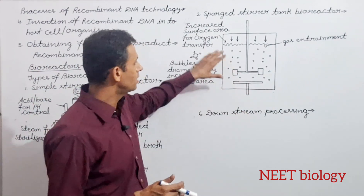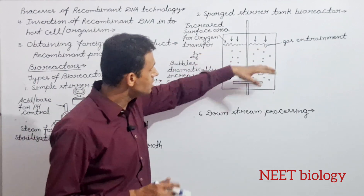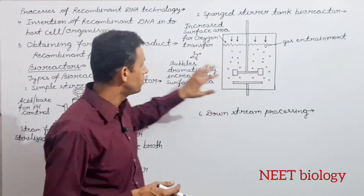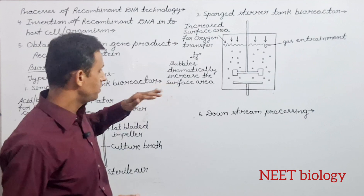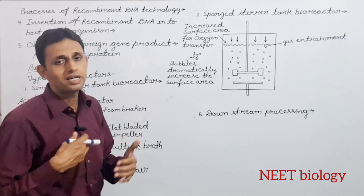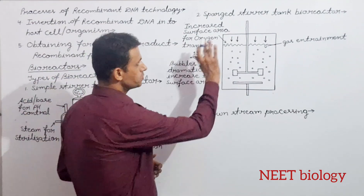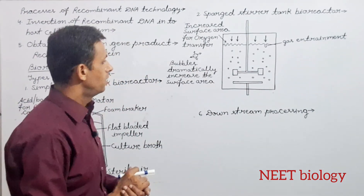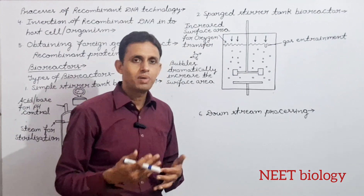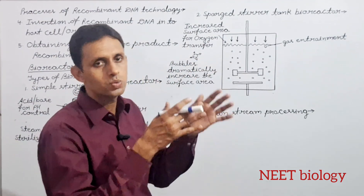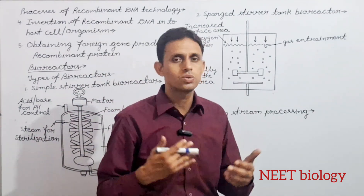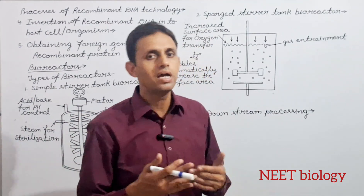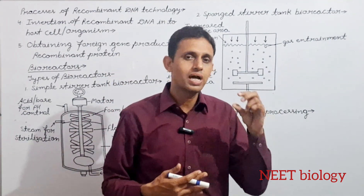Sparged stirred tank bioreactor ज्यादा बेहतर है क्योंकि इसमें oxygen transfer के लिए ज्यादा surface area है। इसमें gas entrainment होता है और bubbles बनते हैं जिनसे oxygen का surface area increase होता है। यह दोनों types board exam में पूछे जाते हैं। Bioreactor में transformed cells को large scale पर culture करवाया जाता है जिससे large biomass बनता है और desired protein या hormone produce होता है।